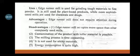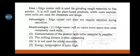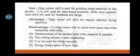Uses: Edge runner mill is used for grinding tough materials to fine powder. It is still used for plant-based products, while more sophisticated mills are used for chemicals and drugs. Advantages: Edge runner mill does not require attention during operation.